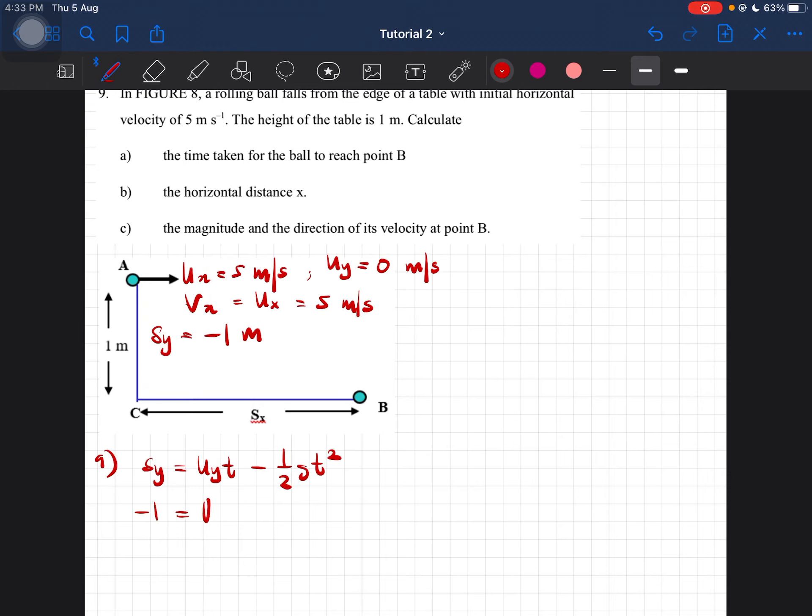Now sy is equal to negative 1, uy is 0, minus half times 9.81 times t squared. So the time here we'll get is 0.45 seconds. Okay, easy right? Yes, easy.